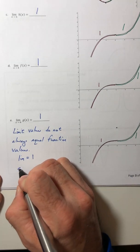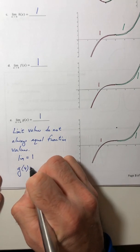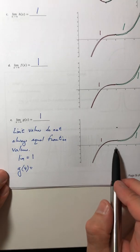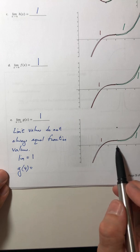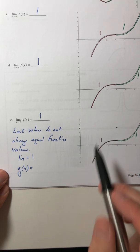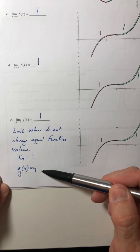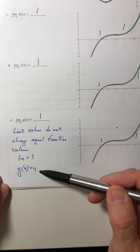But if we actually look at the function value, like if I said, okay, well, what is G of four? Now you're looking for, well, where's the actual point? So when X is four, your point's up here, so G of four is four. So limit values and function values do not always have to equal each other.